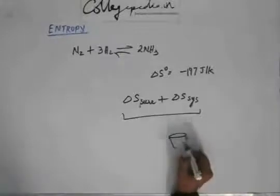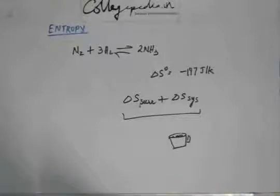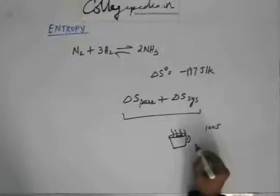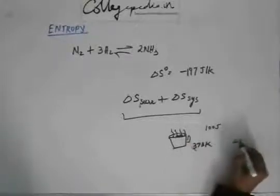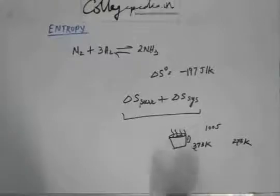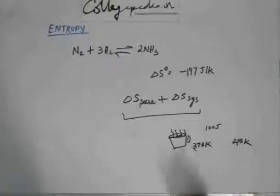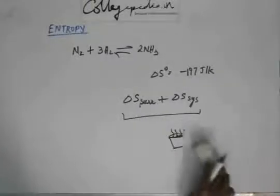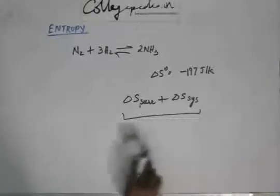Remember, in the very beginning, one of the first problems we solved was the coffee cooling example. When coffee becomes cold, it releases energy to the surroundings. If it releases 100 joules at 373 Kelvin (100°C) while the surroundings are at 273 Kelvin, we calculated delta S of the cup and delta S of the surroundings. We found that delta S of the cup plus delta S of the surroundings is positive — that's why the process is spontaneous. So we have to consider all systems and subsystems interacting with each other. Just calculating delta S of this particular reaction is not enough to comment on its feasibility or spontaneity.